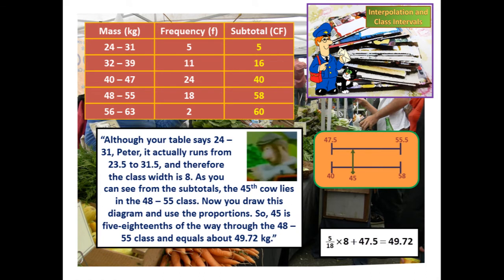Then I showed him how to use a little diagram based on ratio to uncover the upper quartile mass. 'Although your table says 24 to 31 Peter, it actually runs from 23.5 to 31.5 and therefore the class width is 8. As you can see from the subtotals, the 45th cow lies in the 48 to 55 class. Now you draw this diagram and use the proportions — so 45 is 5/18ths of the way through the 48 to 55 class — and equals about 49.72 kilograms.'